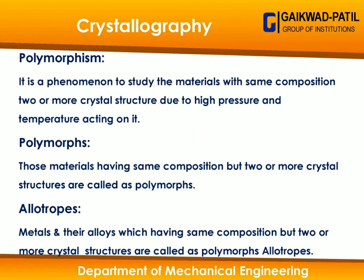This is a phenomenon caused by high pressure and high temperature, where material forms with the same composition but different crystal structures. A polymorph is a material having the same composition but two or more types of crystal structures. Materials with the same composition but different crystal structures are called polymorphs. Then allotrops — allotrop is a term directed to metals and their alloys. Metals that also have the same composition but different crystal structures are called allotrops.